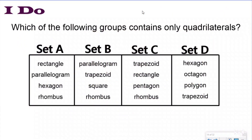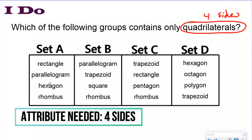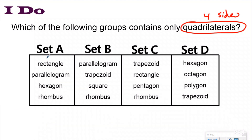For this problem, it's asking which group contains only quadrilaterals. I'm looking for the group categorized by having four sides — that's the attribute I'm looking for. I'll go through each shape in the group: Rectangle — yes, four sides. Parallelogram — yes. Hexagon — no. So Set A is not the group that contains only quadrilaterals.